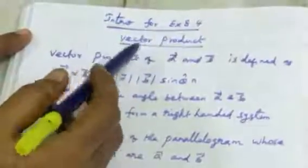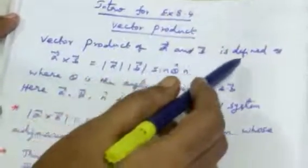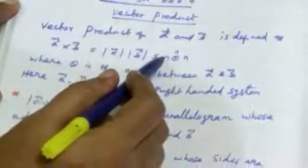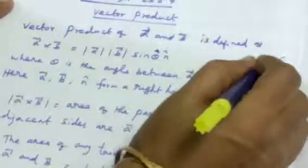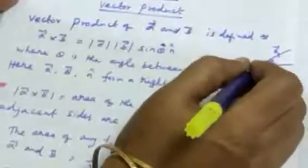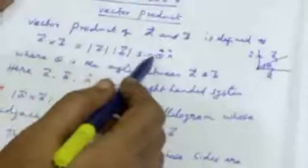Introduction for Exercise 8.4: Vector Product. Another name for vector product is cross product. Vector product of A and B is defined as A cross B equals modulus of A into modulus of B into sin theta into N cap, where theta is the angle between A vector and B vector.